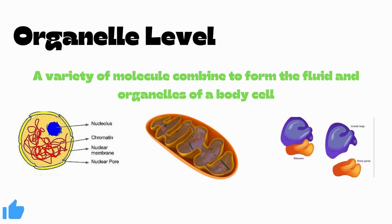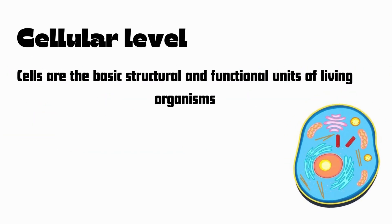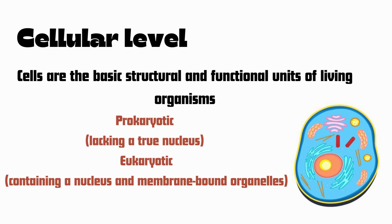Without organelles, a cell cannot survive. The next level is the cellular level. Cells are the basic structural and functional units of living organisms. They are made up of molecules and can perform essential life processes. Cells can be categorized as prokaryotic — lacking a true nucleus — or eukaryotic, containing a nucleus and membrane-bound organelles.